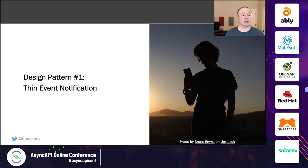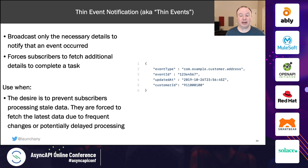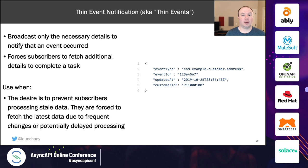The first design pattern is thin event notification — where we only broadcast the necessary details about when an event occurred. This forces subscribers to reach out to a request-response API to fetch additional details. We use this when we want subscribers to always have the most current data. If data could have been changed by multiple API consumers and we don't want event processing to operate on stale data, we send just enough for the consumer to determine interest and then fetch the latest version.